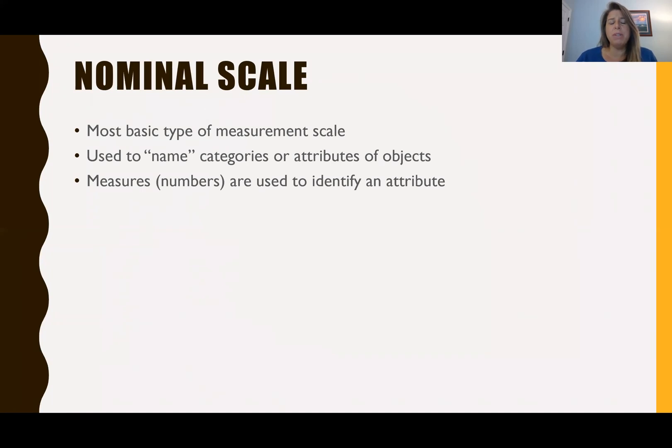So the numbers that we assign are used to identify the attribute but they're arbitrary. It doesn't matter. You can give it any number and it doesn't really matter. They're arbitrary and that's because the numbers have no real meaning. What has meaning is the actual category name or the label. So it's really important to note that with nominal scales there's absolutely no hierarchy between the categories.